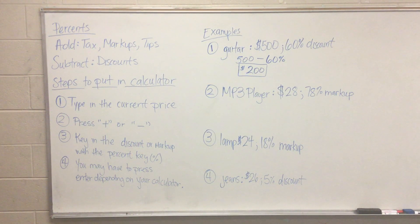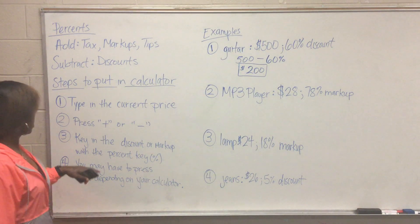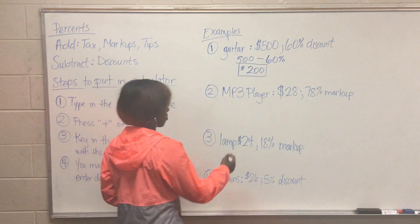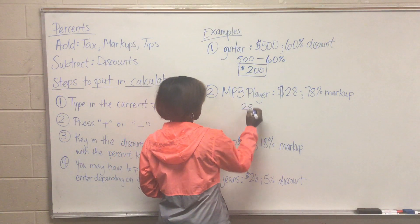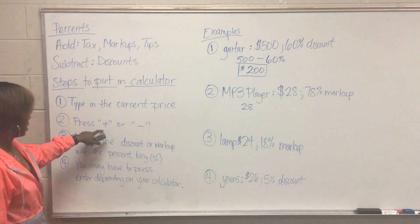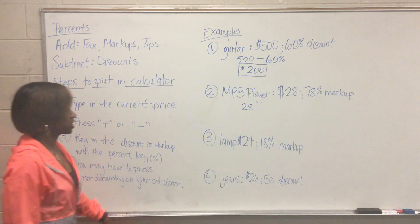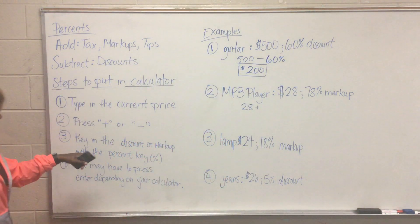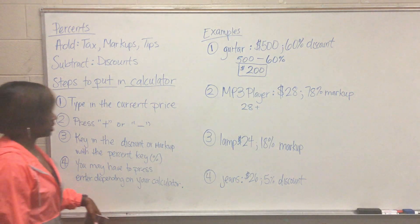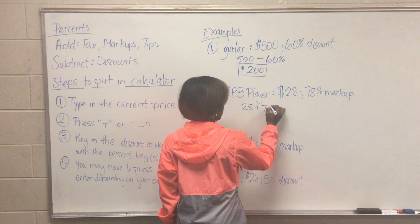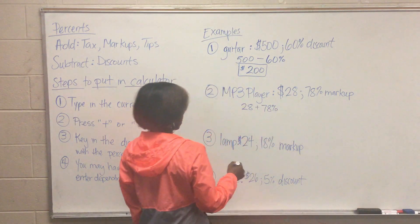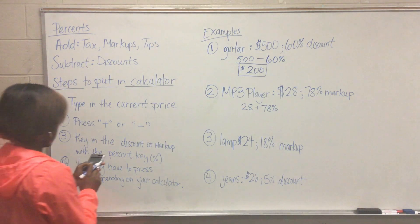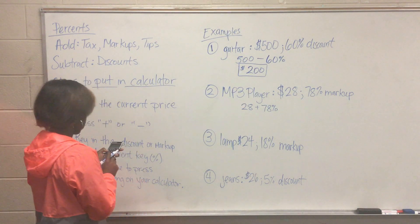Now for number two we have an MP3 player that is $28 and it is a 78% markup. So first things first, type in the current price or the original price which is $28, then I have to press the addition key - it's a markup so I'm going to add - and then key in the markup with the percent key. So the markup is 78%, so I have 28 plus 78% and this is what I put into the calculator.